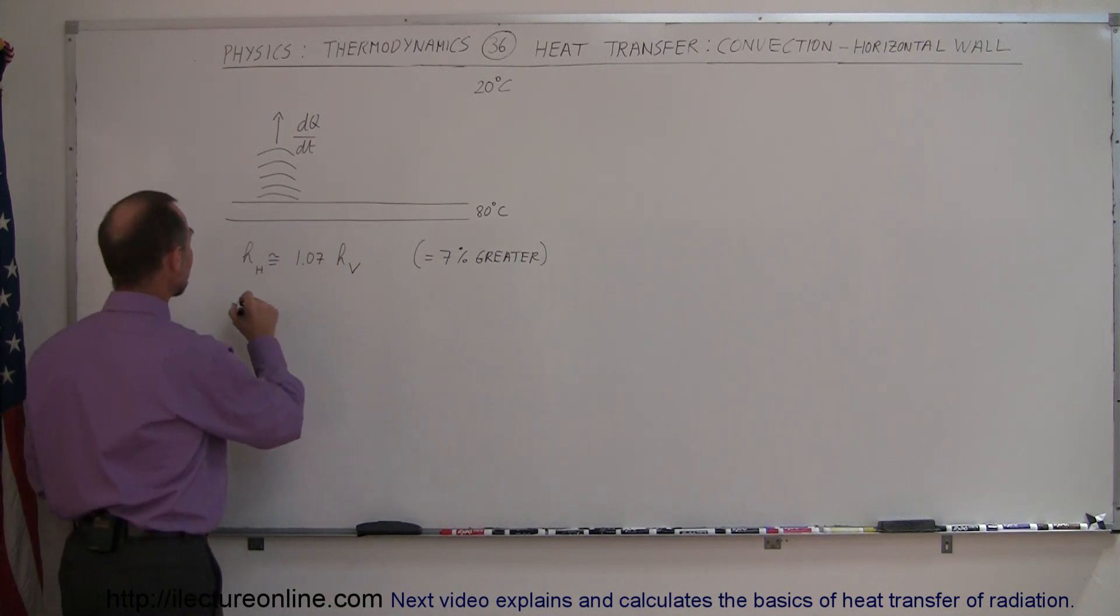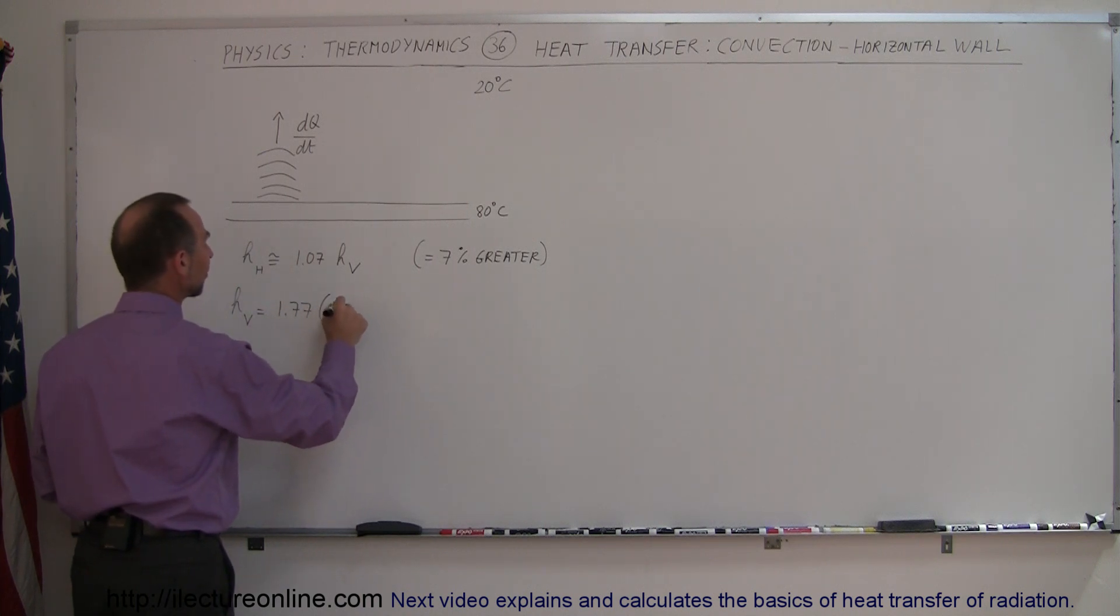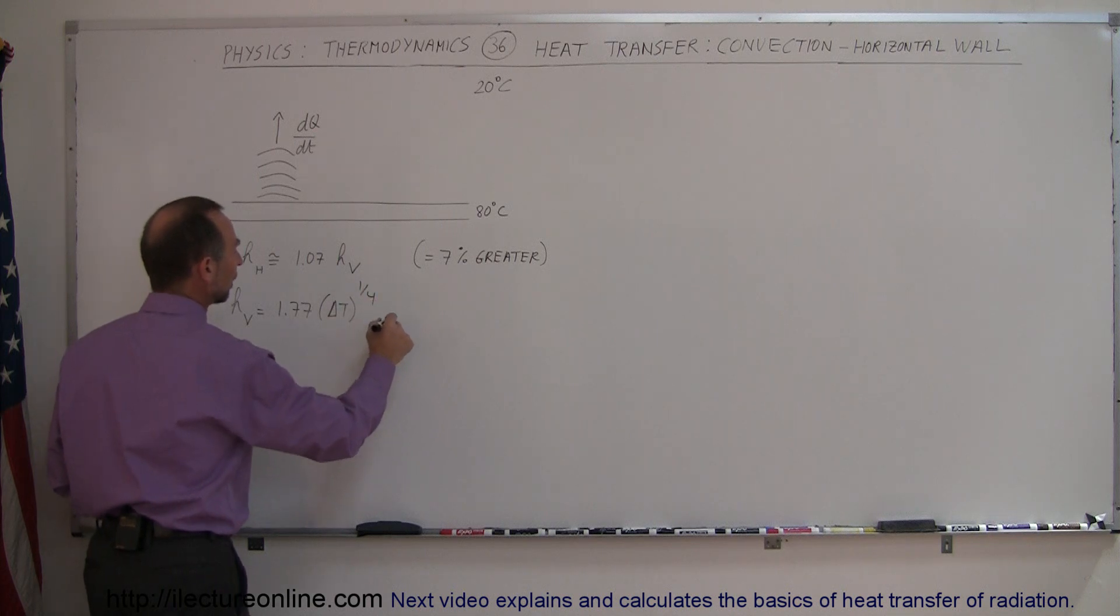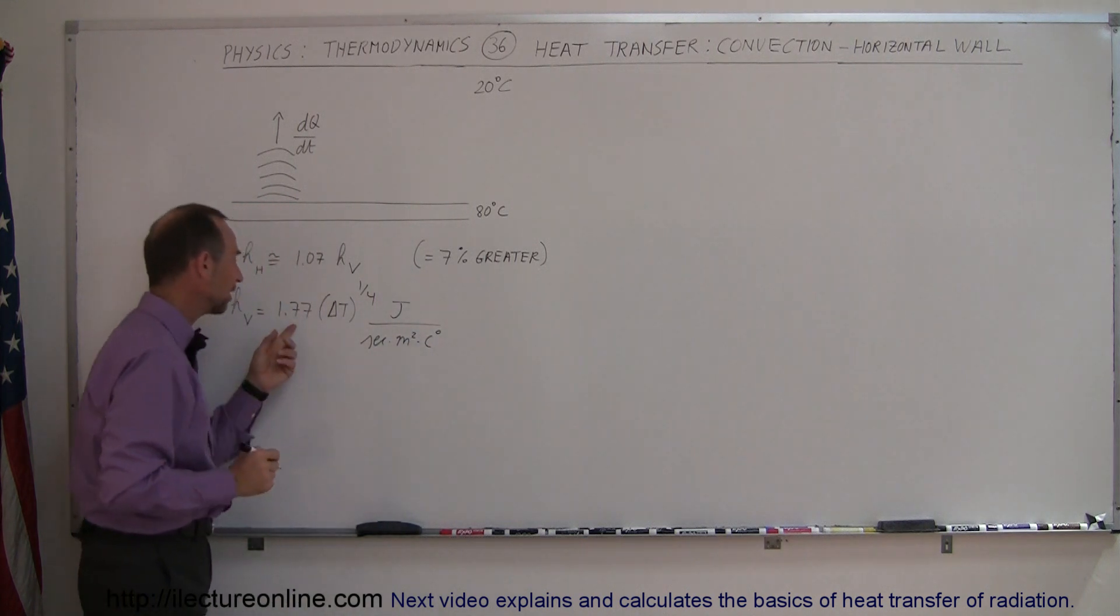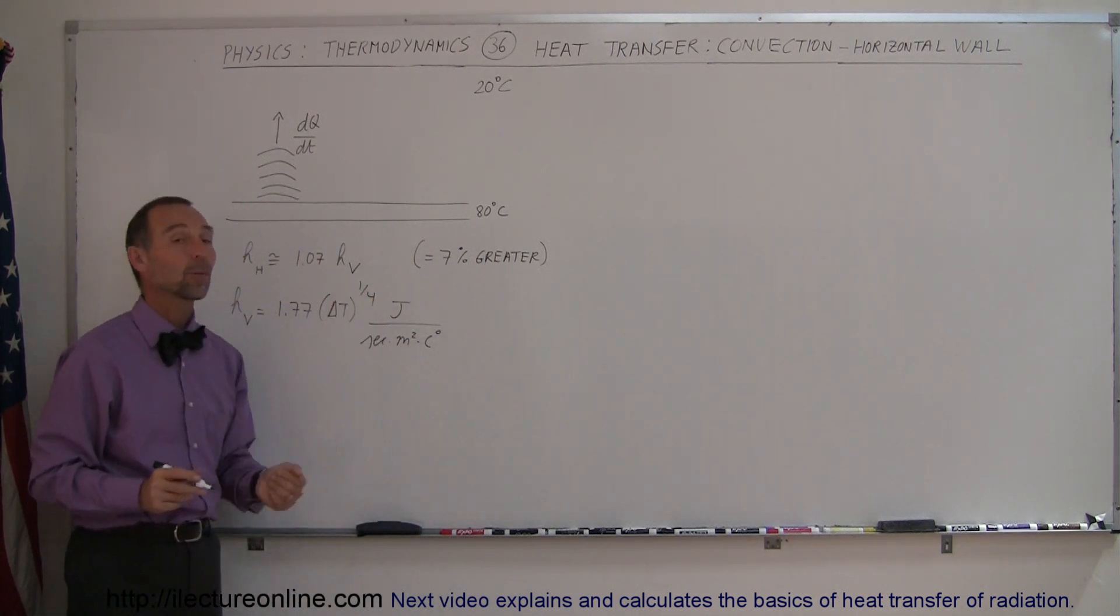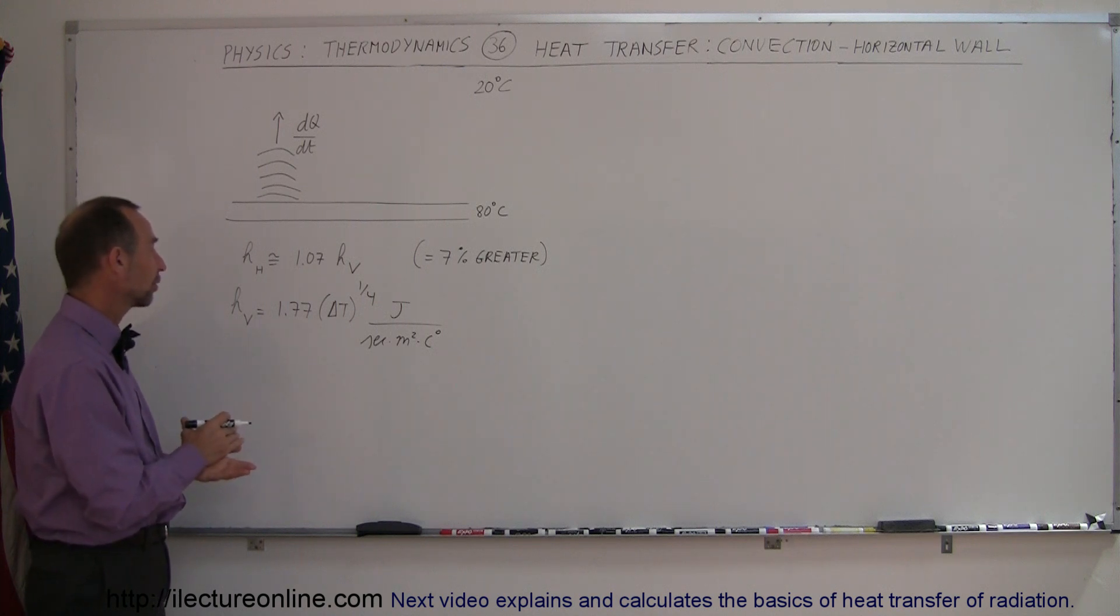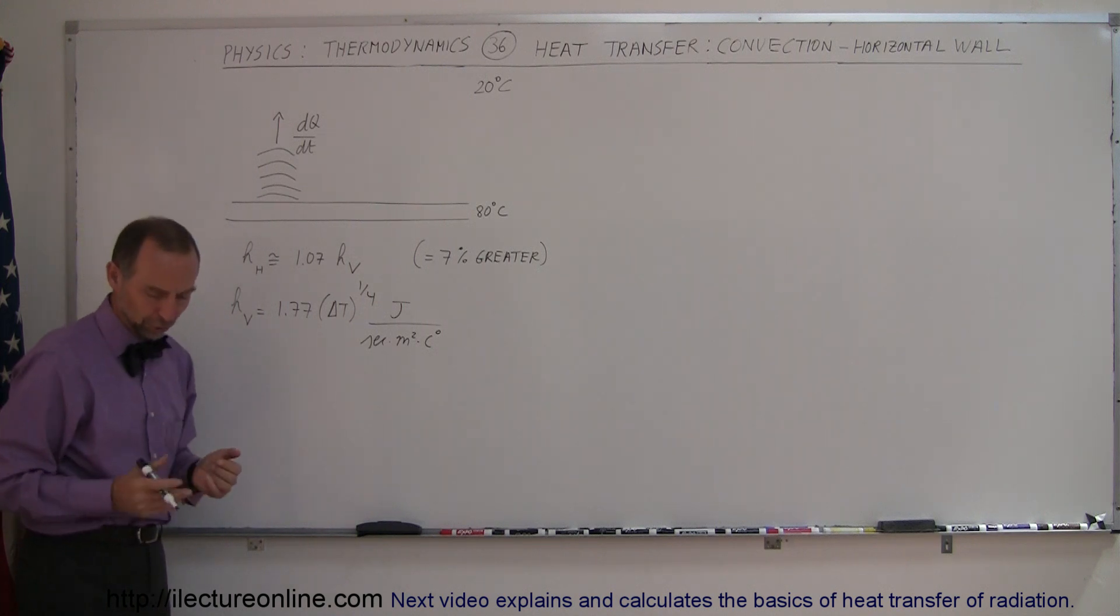Remember that the H factor for the vertical surface with air was 1.77 times the difference in the temperature to one-quarter power, and the units were joules per second per square meter per centigrade degree. So we have to take this number and multiply it times about 1.07 to get the equivalent factor for the horizontal surface.